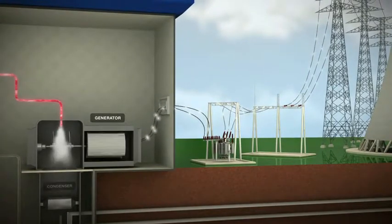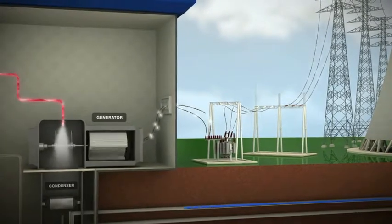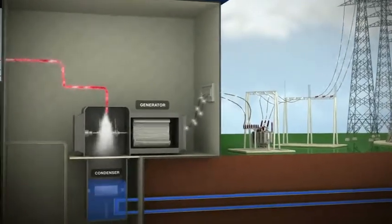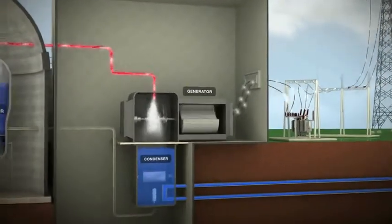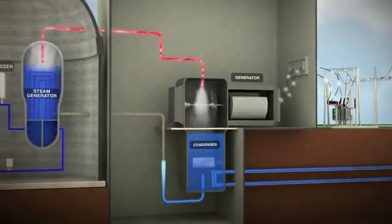After the steam is used in the turbines, it is drawn into a condenser, where it is cooled and condensed back into water and pumped back to the steam generator to be heated and reused.